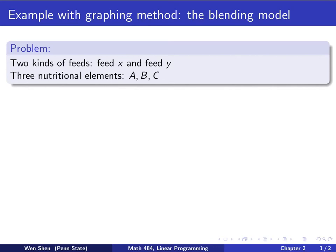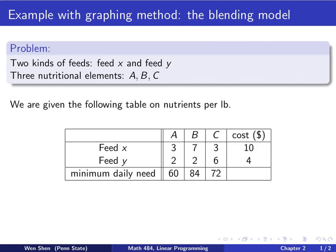And there are three nutritional elements that I need to watch as a farmer for the well-being of my cows. Let's call them A, B, and C. We are now given the following table on the information for the nutrients per pound for both feeds, X and Y.